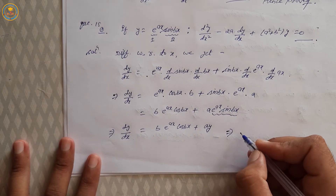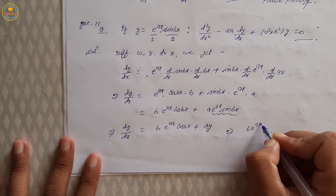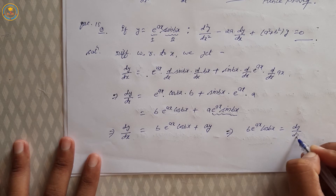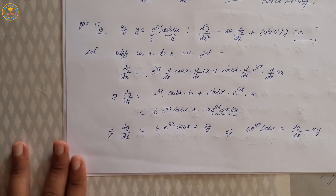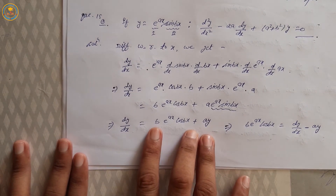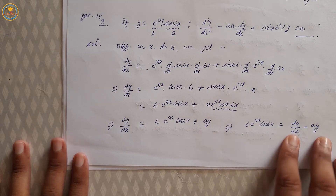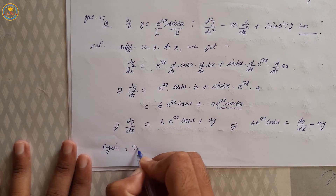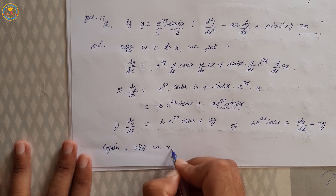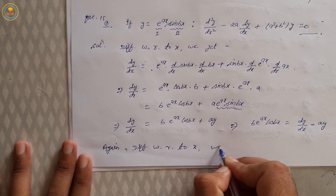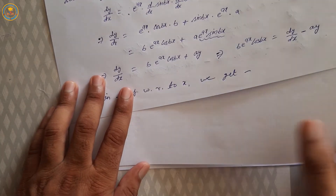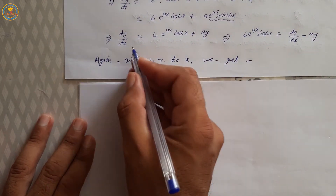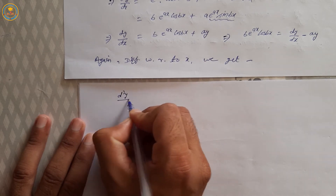dy/dx = b · e^(ax) · cos(bx) + a·y. Therefore b · e^(ax) · cos(bx) = dy/dx − a·y. Find the value of b · e^(ax) · cos(bx) = dy/dx − a·y. Again differentiate with respect to x.